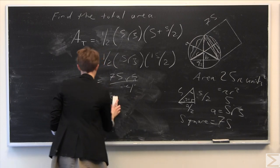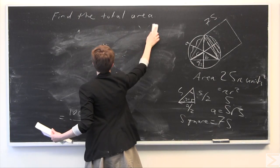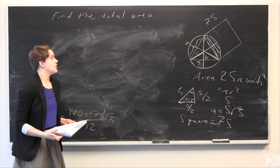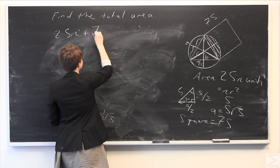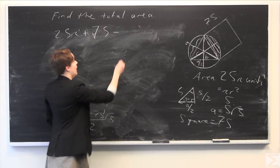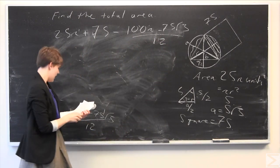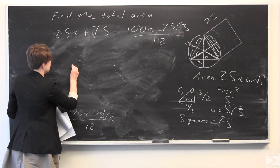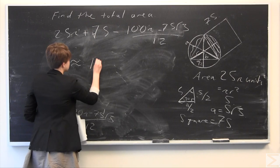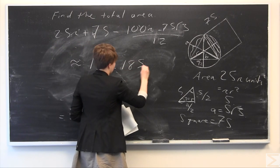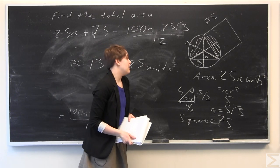The final step is to add together all our areas and subtract off the sector area to avoid double counting. Total area = area of circle + area of square − area of each sector = 25π + 75 − (100π − 75√3)/12. This is approximately equal to 138.185 units squared, which makes sense given that the area of the original circle is 25π.